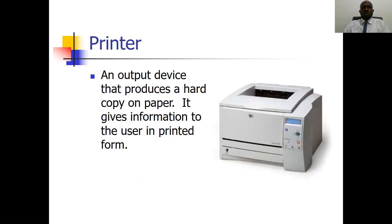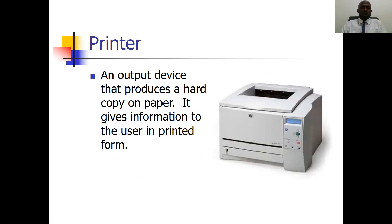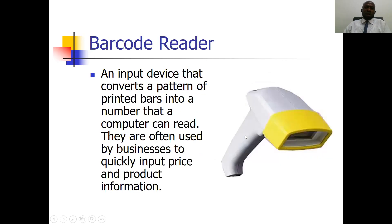You also have a printer, which is another type of output device. It is an output device that produces a hard copy on paper, giving information to the user in printed form. You are able to print your pictures, your assignments, and other documents on a sheet of paper using this type of output device.